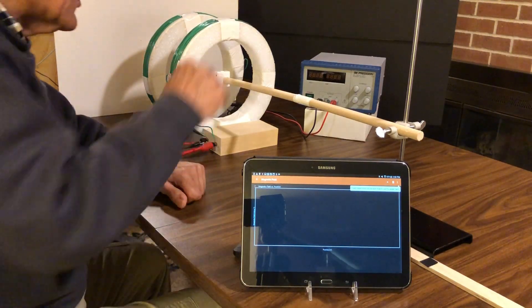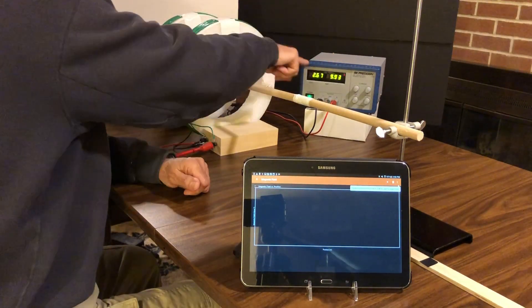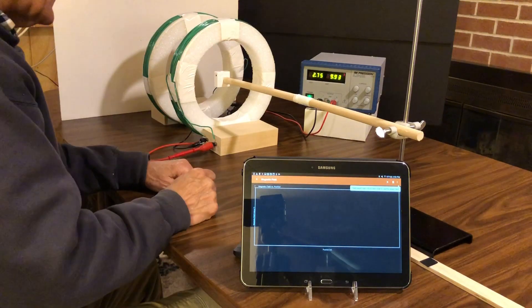At this point I'll turn on the current in the loops. As you can see here it's approximately 9.9 amps.